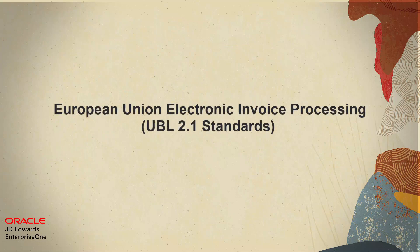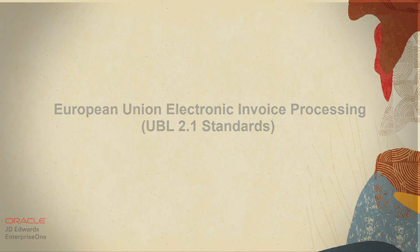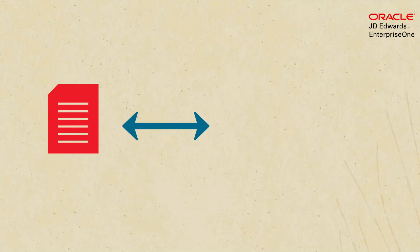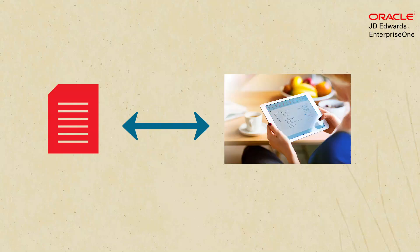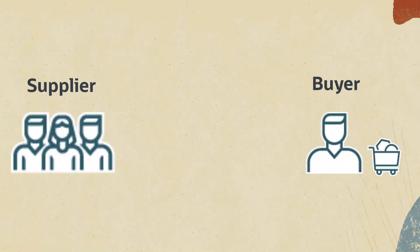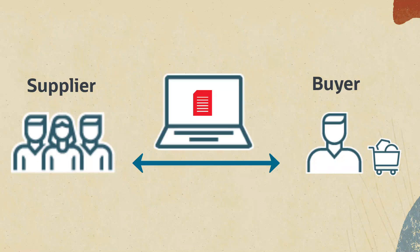Hi, do you want to ship from paper invoice to paperless invoice? Here is a solution. JD Edwards Enterprise One Localizations for European Union provides a way to generate and process both the inbound and outbound electronic invoices. Electronic invoicing is the exchange of an invoice in the electronic form between a supplier and a buyer.